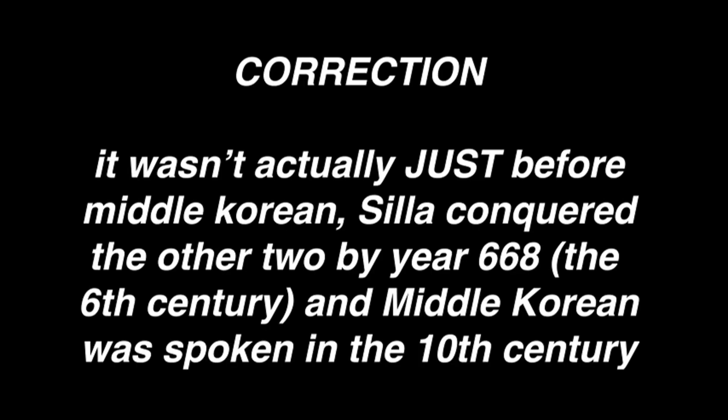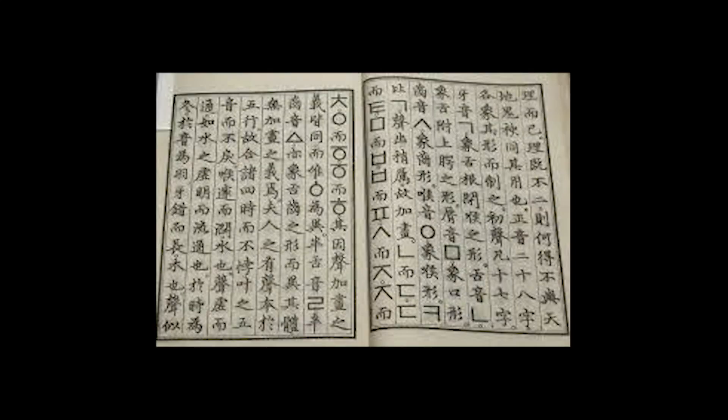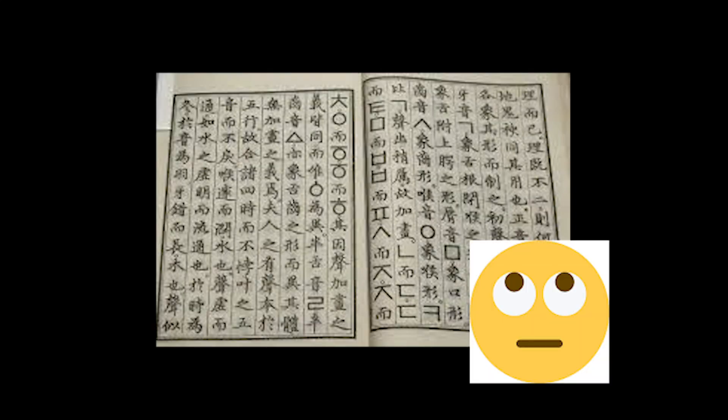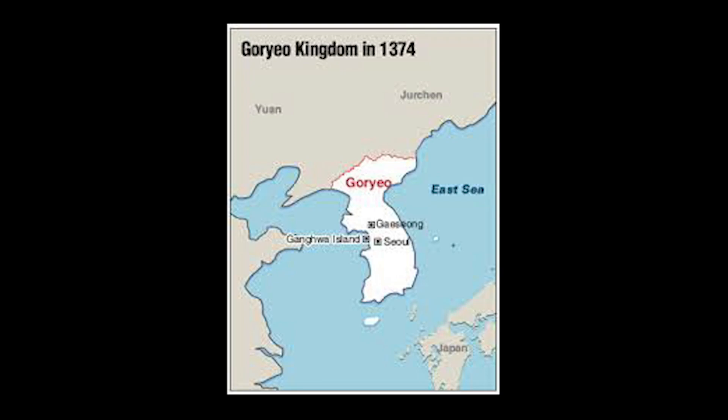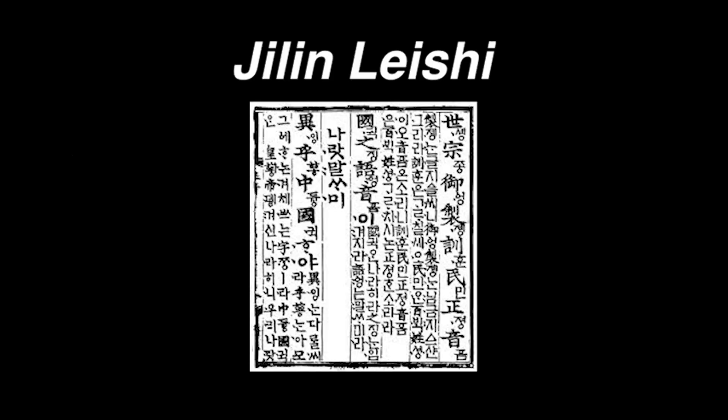This was just before Middle Korean, and because it didn't have its own writing system, it adopted the Chinese one, which was an awful idea. When the Goryeo dynasty came to power, the Kaesong dialect became dominant as it was the dialect of the capital city at the time. This was Middle Korean, and also the period where the first Korean source is found, written in Chinese.